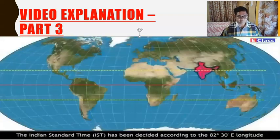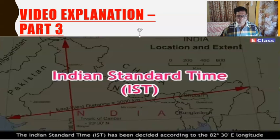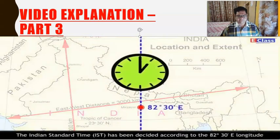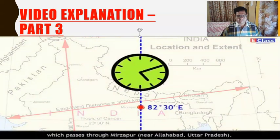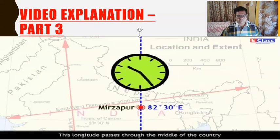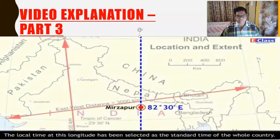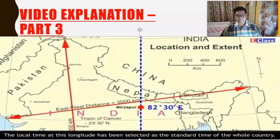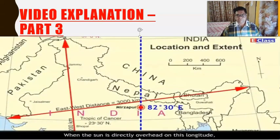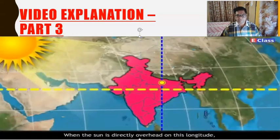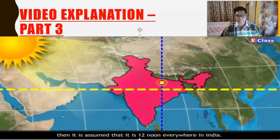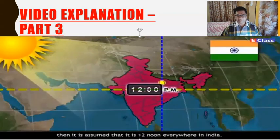The Indian Standard Time, IST, has been decided according to the 82 degrees 30 minutes East longitude, which passes through Mirzapur, near Allahabad in Uttar Pradesh. This longitude passes through the middle of the country with reference to its longitudinal extent, and so the local time at this longitude has been selected as the standard time of the whole country.